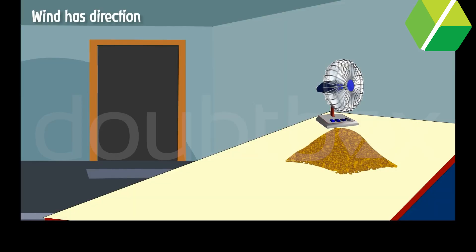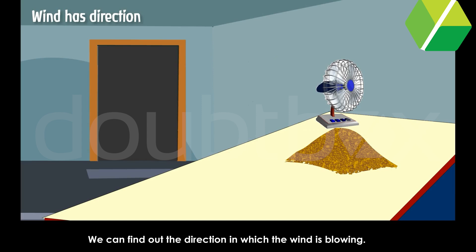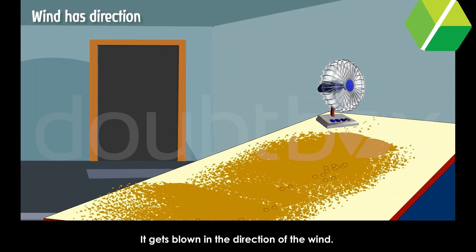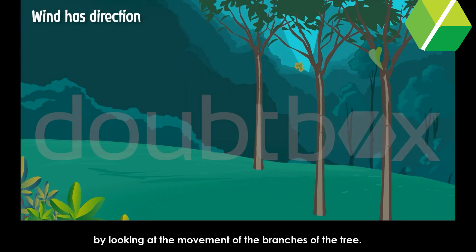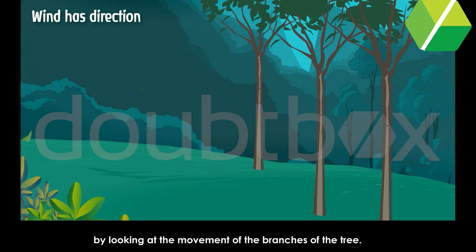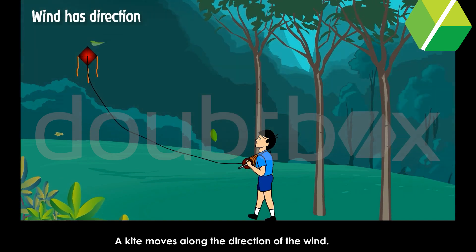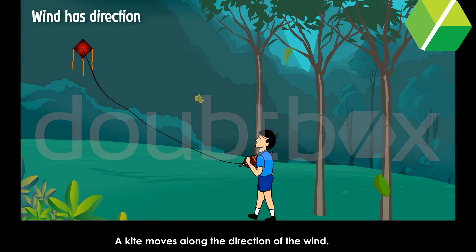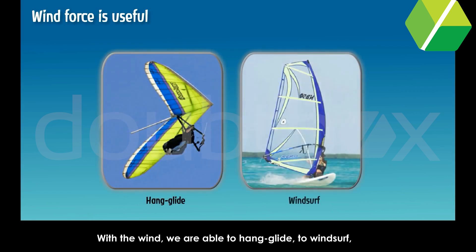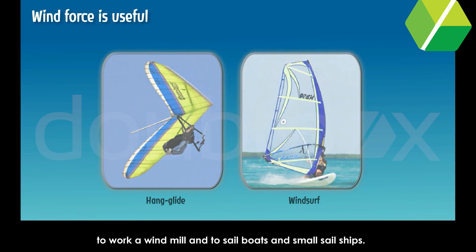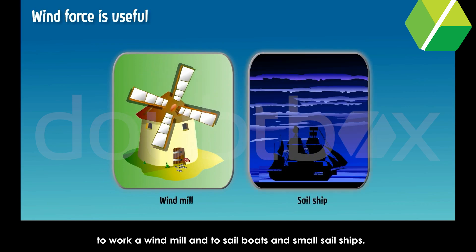Wind has direction. We can find out the direction in which the wind is flowing by placing some sand on a table and switching on a fan — it gets blown in the direction of the wind. We can also find the wind's direction by looking at the movement of tree branches, or by observing how a kite moves along the direction of the wind. Wind force is useful — with the wind we are able to hang glide, windsurf, work a windmill, and sail boats and small sail ships.